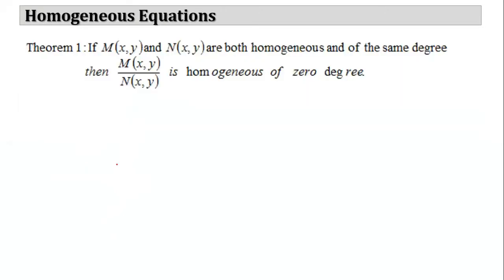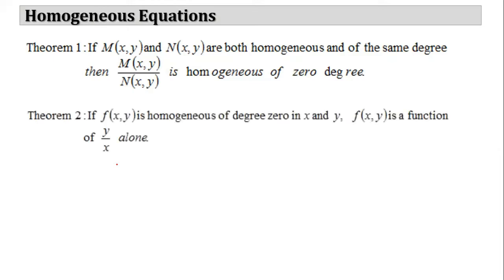The following theorems will help us solve homogeneous equations. If M(x,y) and N(x,y) are both homogeneous and of the same degree, then M(x,y) over N(x,y) is homogeneous of degree zero. Also, if f(x,y) is homogeneous of degree zero in terms of x and y, then f(x,y) is a function of y over x alone.